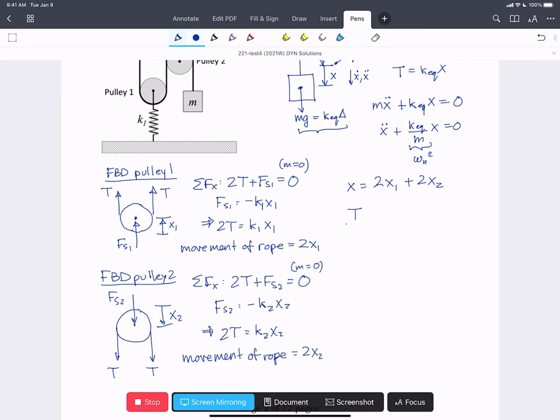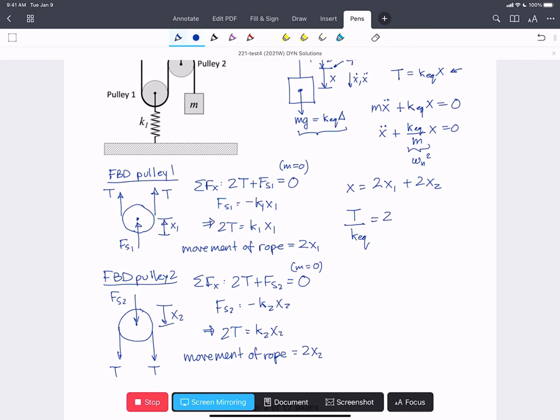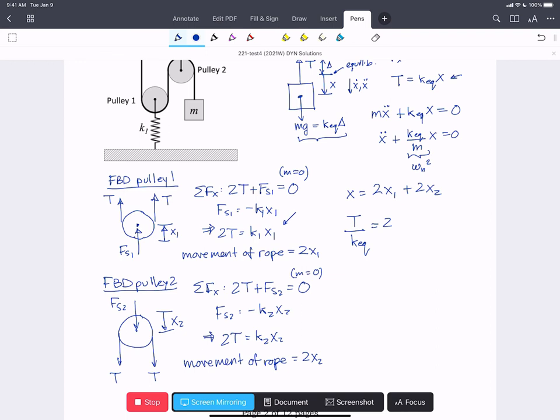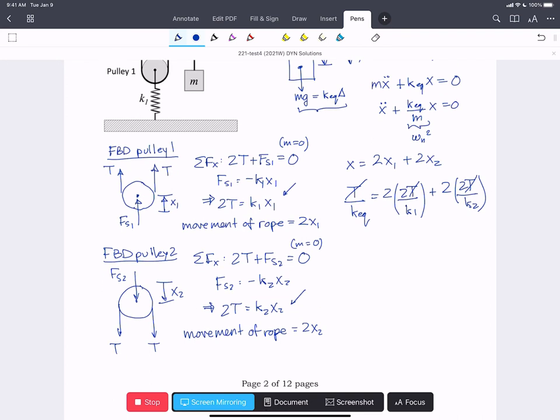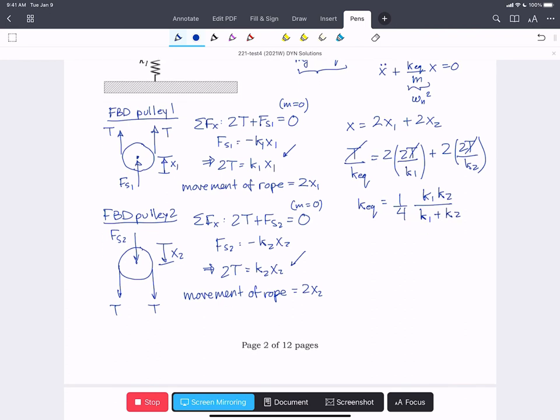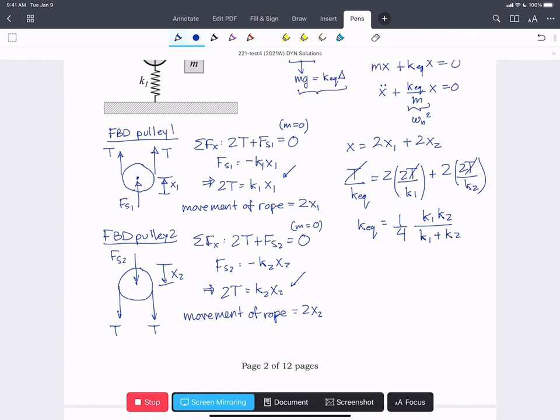We've already said x is T over k equivalent up here. And that equals two times we've got an expression relating T and k one. So that's going to be two times two T over k one plus two T over k two. The T's all cancel here. It's the same tension everywhere. And we end up, if we rearrange, we get k equivalent equals one fourth k one k two over k one plus k two. And so we can stick that in to our expression for omega n squared.